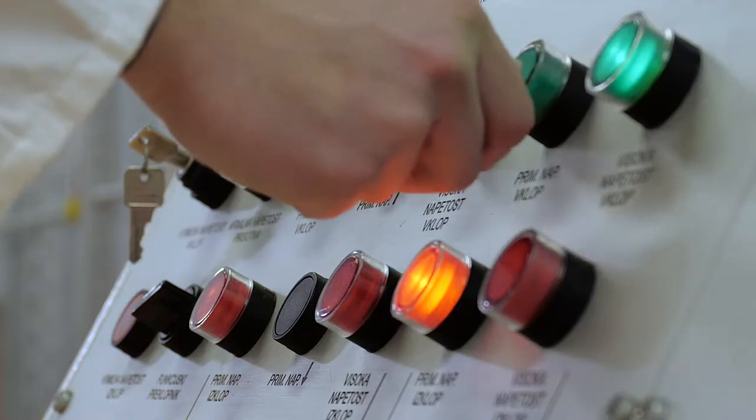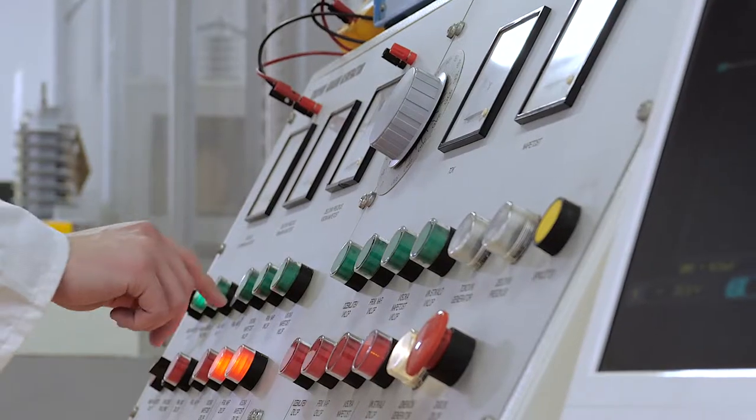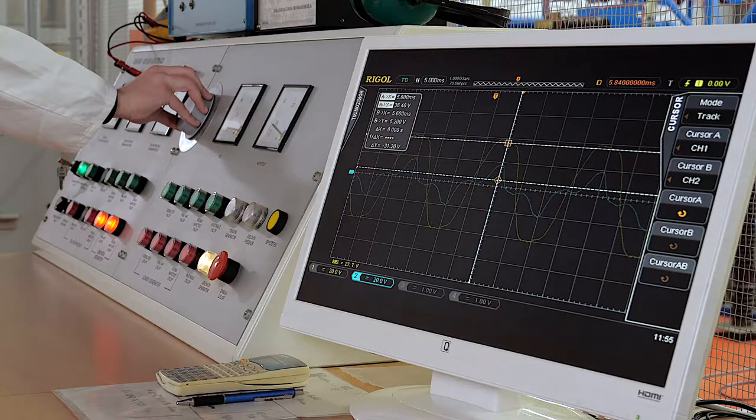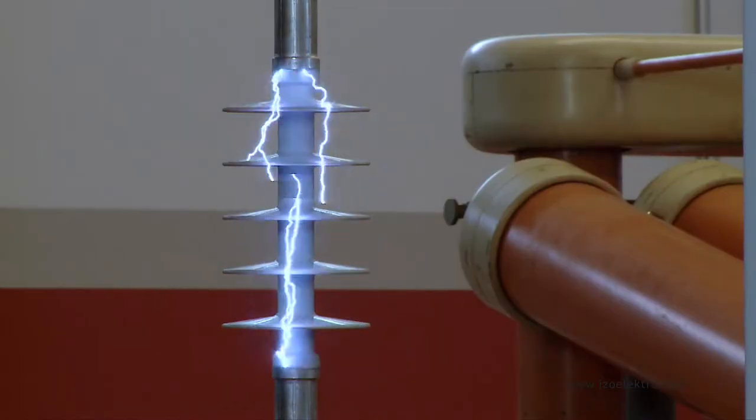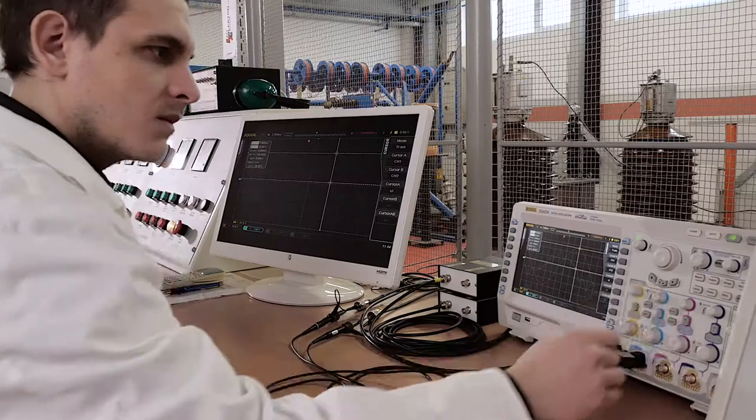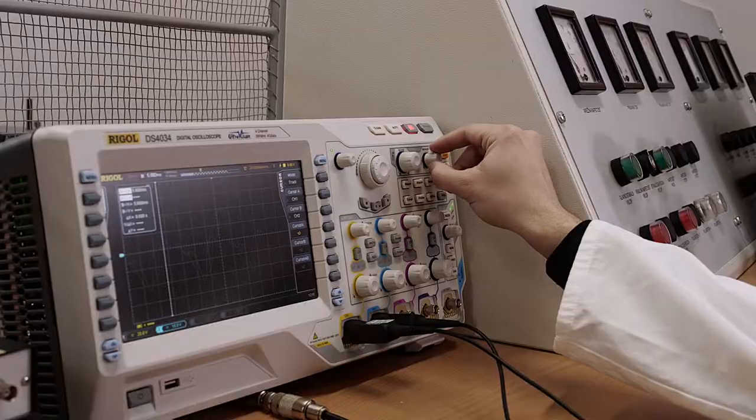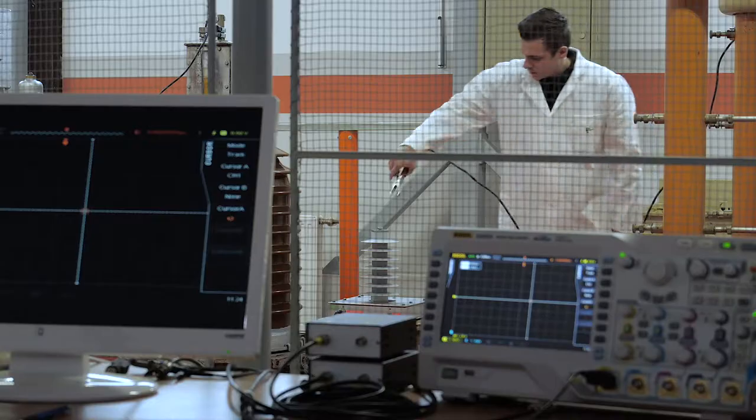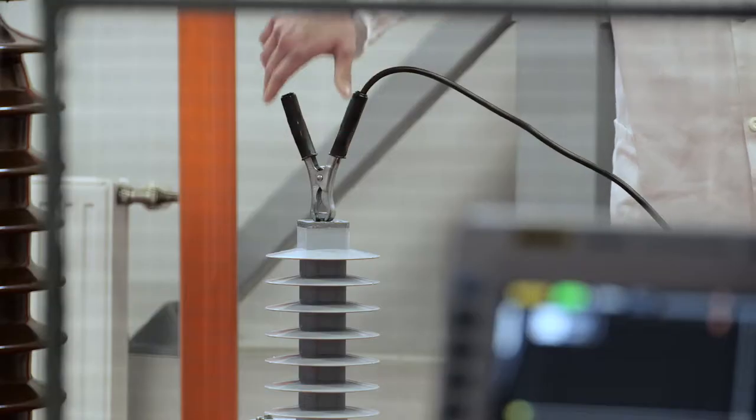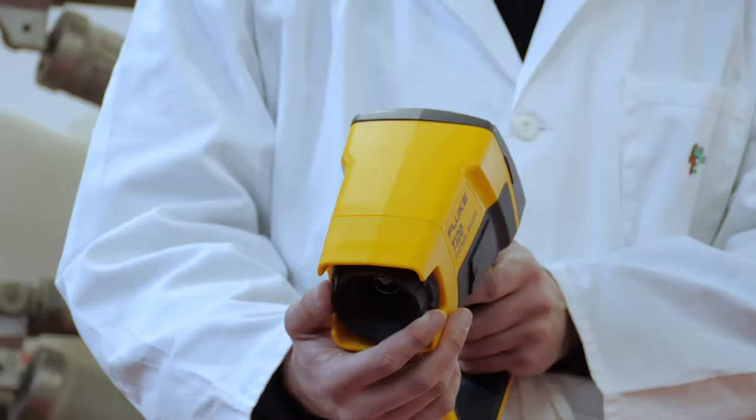We have our own high voltage laboratory that enables us to run tests with alternating voltages of up to 220,000 volts and 1.2/50 microseconds wave shaped lightning impulse voltages on medium voltage surge arrestors up to 50,000 amps. The lab allows us to run most standard tests on medium voltage surge arrestors.